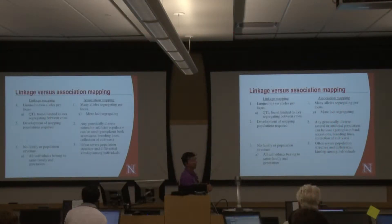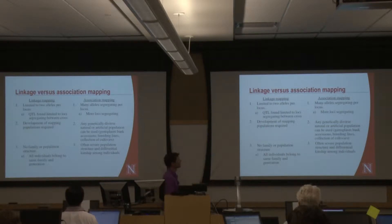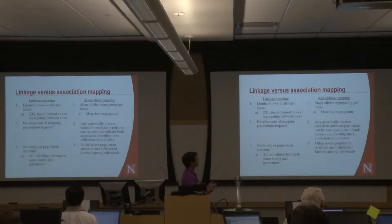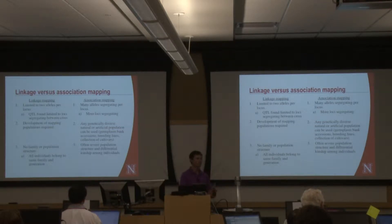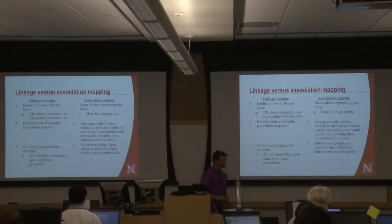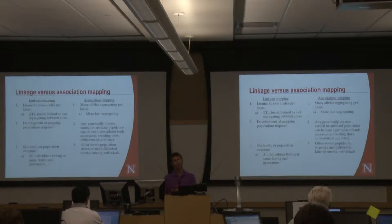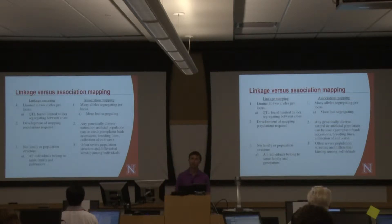With association mapping, if we're using the diversity contained within our species or breeding population, we're looking at hopefully all the alleles segregating in that population. We can use any collection of lines that already exist, so we can genotype, phenotype, and maybe get good results by next year. But the problem is we often have severe population structure that we have to account for, so we don't get spurious associations. And as I'll show you, accounting for it can actually reduce your power of detection in some situations.